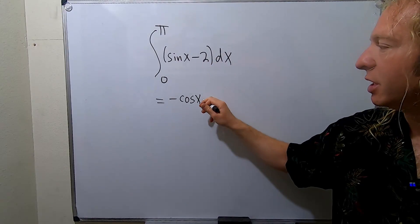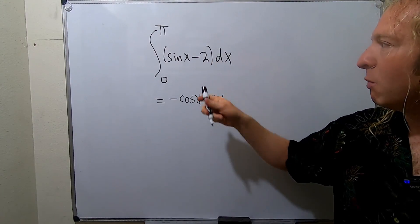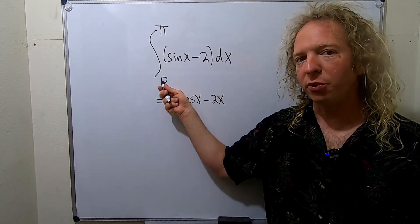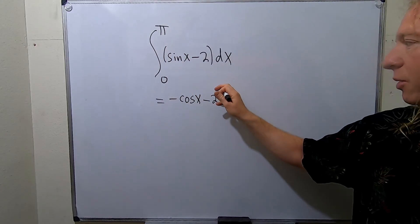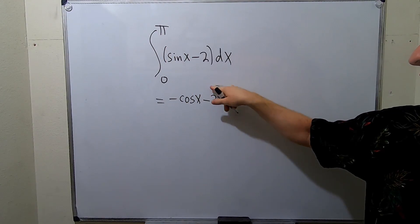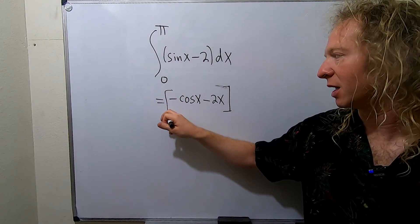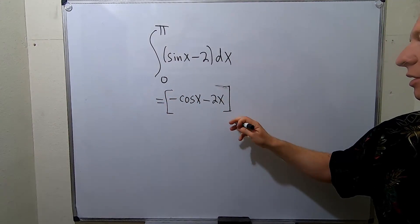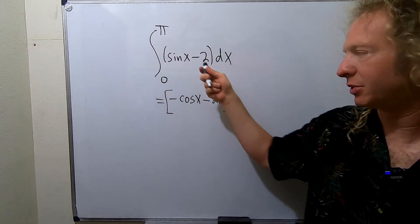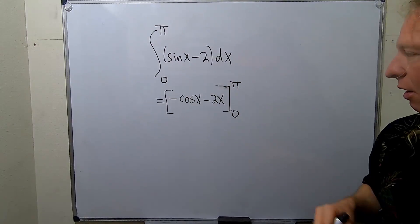When you integrate 2, you just get 2x, and then we're going from 0 to pi. So there are three choices here. You can use a line, you can use a bracket, or you can use two brackets. And the 0 goes here, and the pi goes up here. All right, good stuff.